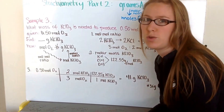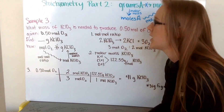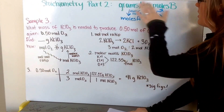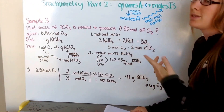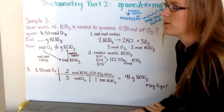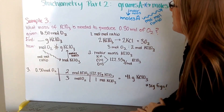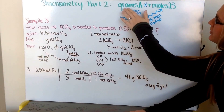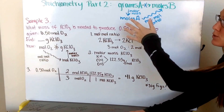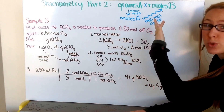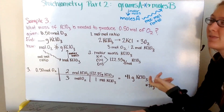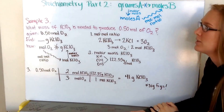This video is part two of stoichiometry. We're going to convert from grams to moles. You'll notice on your Mole Tropolis sheet that you can't go exactly from grams of A to moles of B — there's no direct route from one to the other, so we have to take a little bit of a detour.